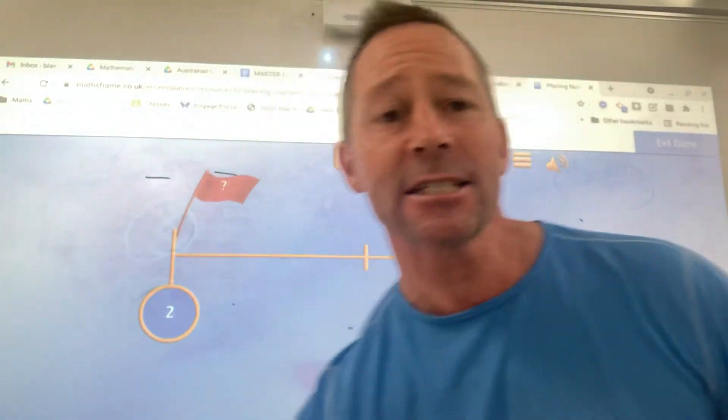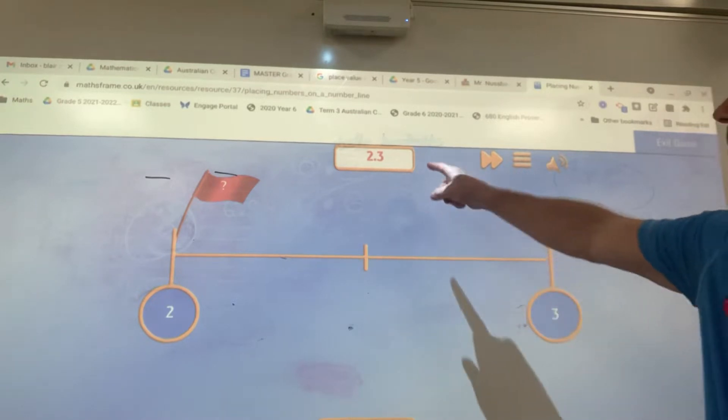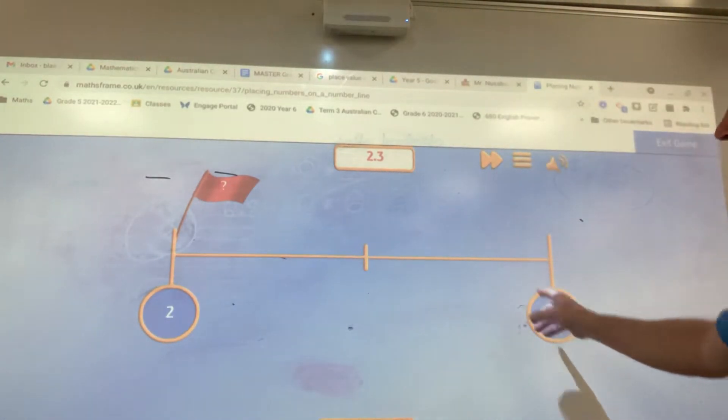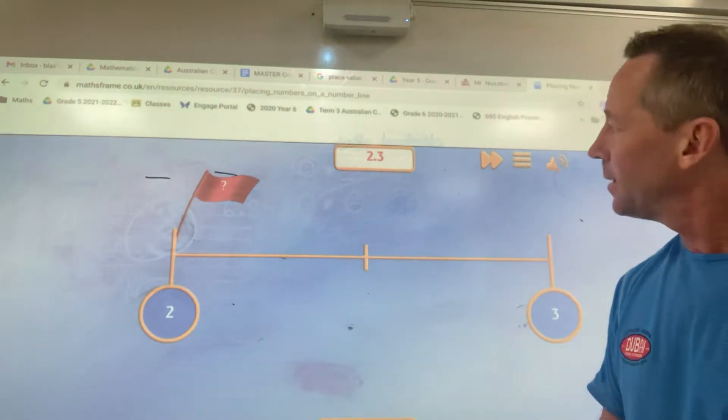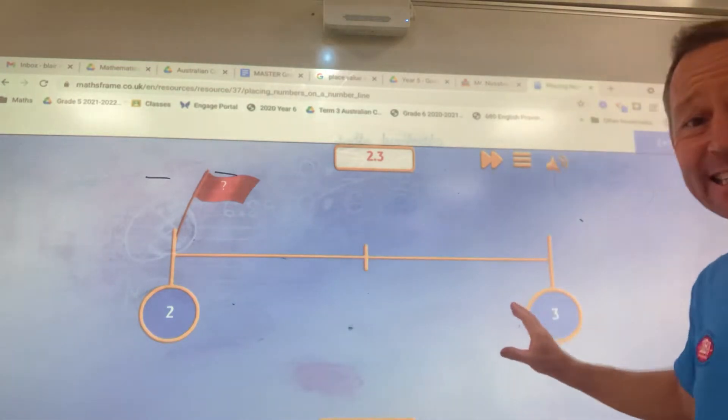There will be times when you're asked to place a decimal on a number line. And where would it go? I can see I have 2 and 3. Now I need to find where to put 2.3. Now we're talking tenths - we've got whole numbers and then tenths.